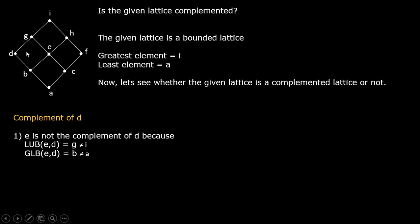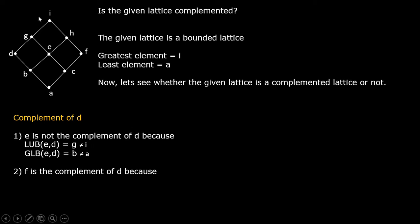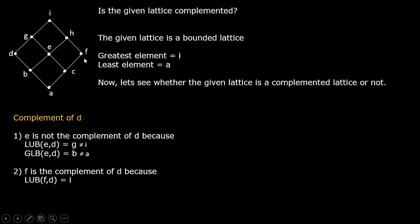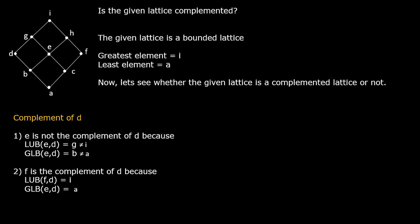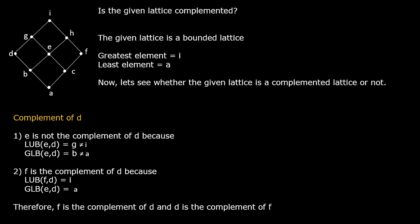Also, the greatest lower bound of e and d is equal to b, which is not equal to a. Hence e is not the complement of d. Now consider f for d — f is the complement of d because the least upper bound of f and d, tracing upwards, gives i, and the greatest lower bound of f and d, tracing downwards, gives a. So f is the complement of d, and d is the complement of f.